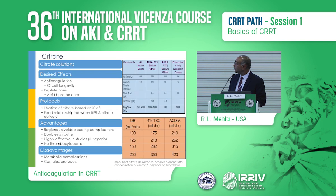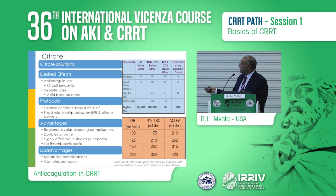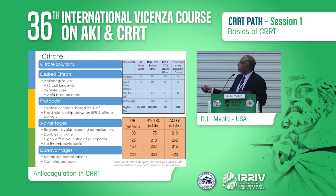Coming to citrate: the key issues are that you can increase filter longevity considerably, maintain the circuits very well, and titration is based on ionized calcium. There are two ways to do it — you can titrate to the ionized calcium, or you can set a fixed relationship to the citrate and blood flow rate. The most common citrate solution is ACD-A, which is used in the blood bank to keep blood products from clotting. ACD-A has 2.8% citrate versus 4% trisodium citrate. There is a significant sodium load: each mole of citrate binds 3 moles of sodium, so 140 millimoles of citrate per liter gives about 420 millimoles of sodium.